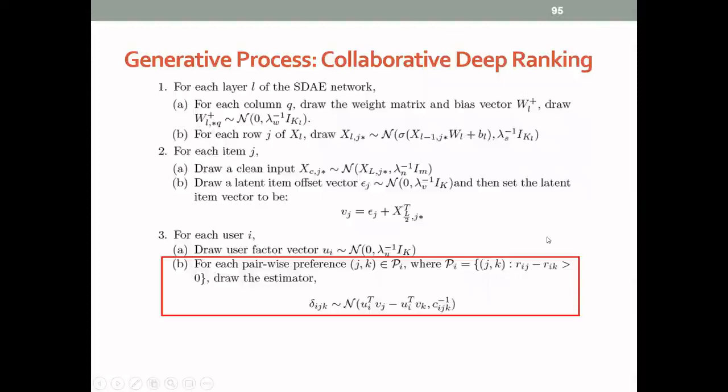So correspondingly, we can modify the CDL model from predicting rating to predicting whether one user will like the one item more than the other. For example, here, this last step is actually trying to predict whether this user i is actually preferring the item j over item k.